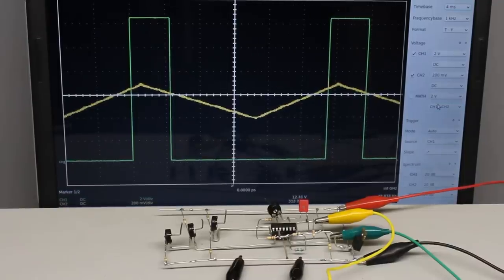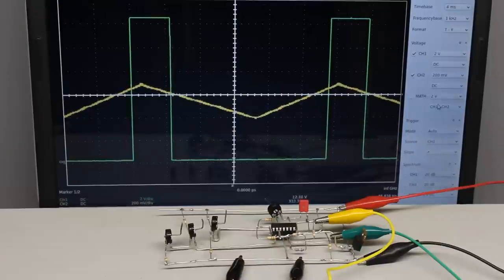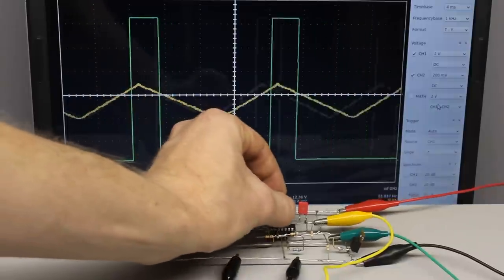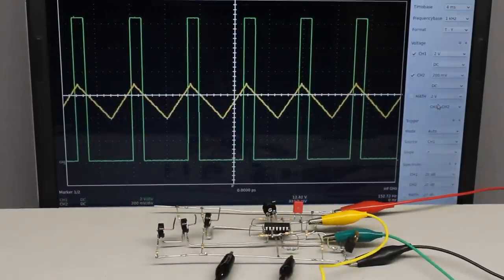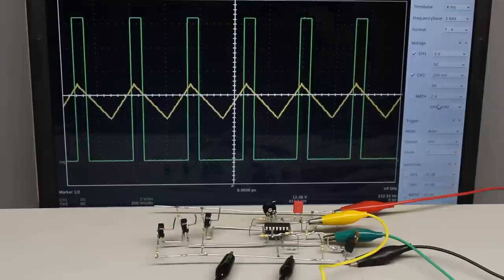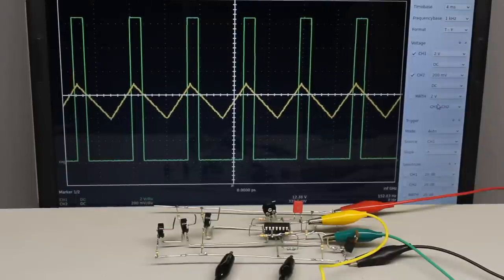The frequency of the signal can be varied by adjusting potentiometer number 4. The lower the resistance value of the potentiometer, the faster the charging respectively discharging procedure of the capacitor, hence the higher the frequency of the triangular voltage and so of the pulse width signal.